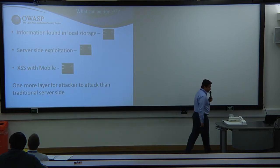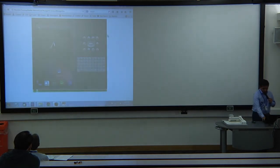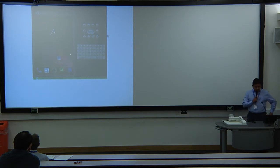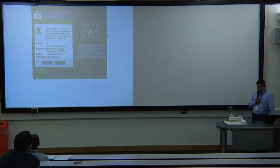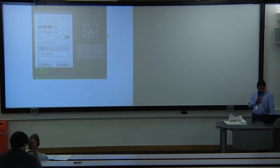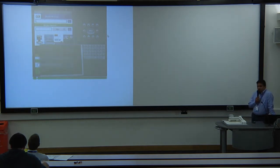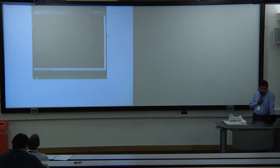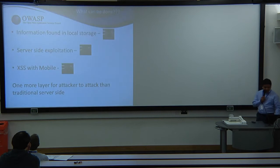Let's look at some demos. This first example is an Android e-commerce application — a bookstore — that allows users to perform standard purchasing. I'm entering my credit card number into the application to perform a transaction. As a user, I don't know what's happening behind the scenes. But if you go look at the application directory, it contains a database file called info.db which has the credit card information stored in plain text.